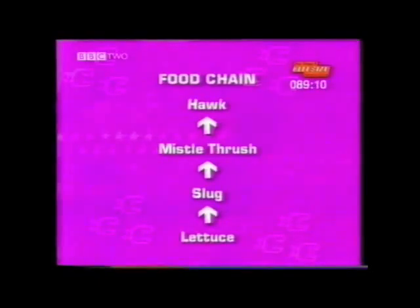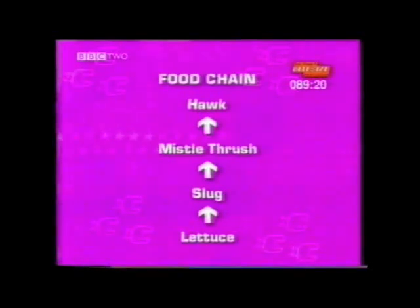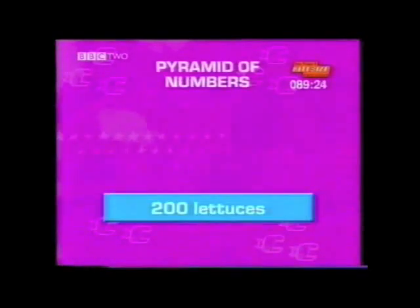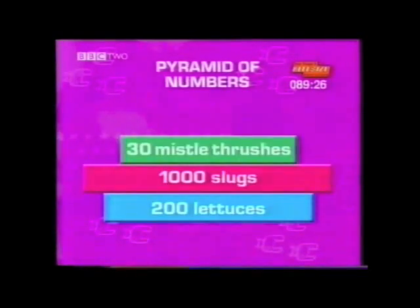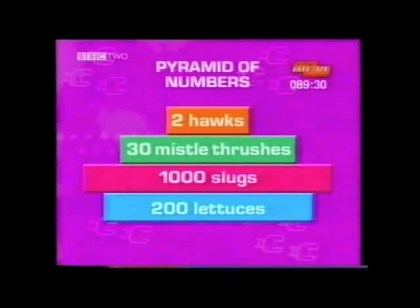Let's look at the food chain from the clip earlier, starting with the slug's food — lettuces. The food chain is: lettuce, slug, mistle thrush, hawk. If we make this into a pyramid of numbers, we have 200 lettuces, 1,000 slugs, 30 mistle thrushes and 2 hawks. This happens because lettuces are large organisms compared to slugs — one lettuce on average can feed 5 slugs.